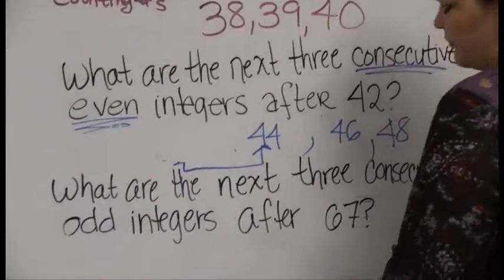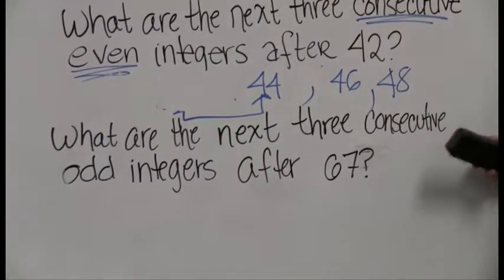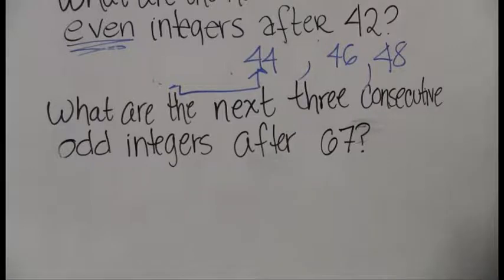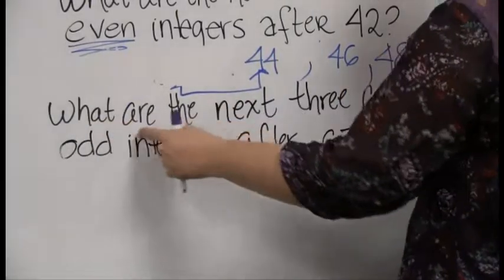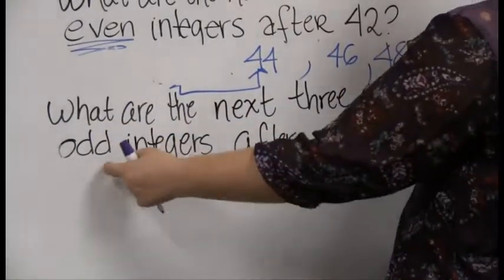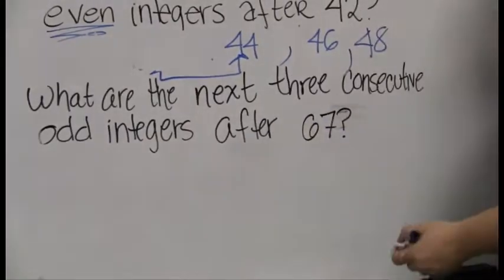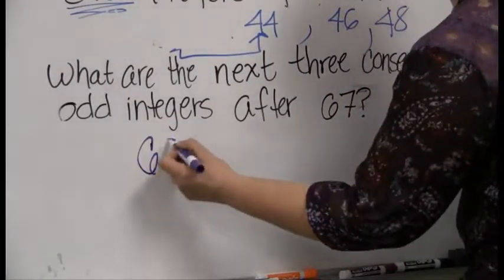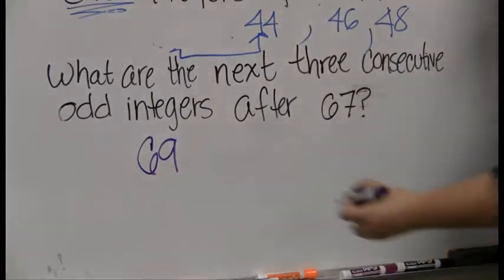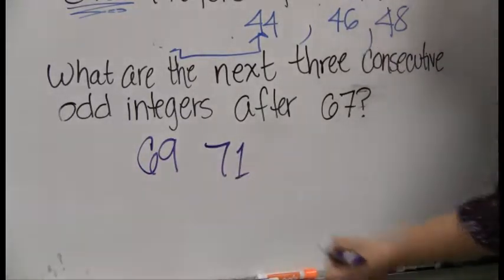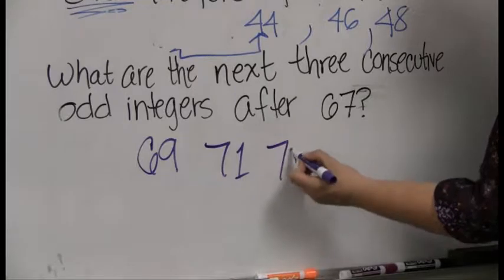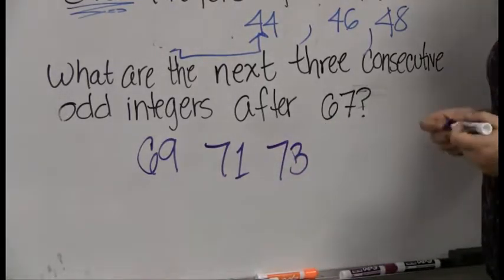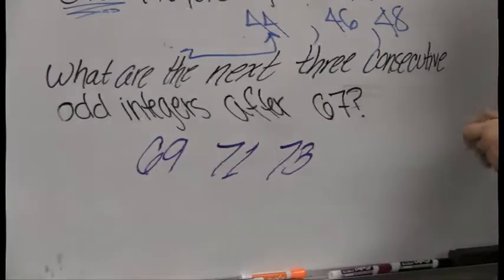Okay, so last one here, very similar to the other one, but instead of even they ask us what are the next three consecutive odd integers after 67. So again, just give me the odds. I don't want 68, I do want 69. 70 is out, but I want 71, and after that the next consecutive odd integer is 73. Pretty simple, but we're going to see lots of great applications of it later.